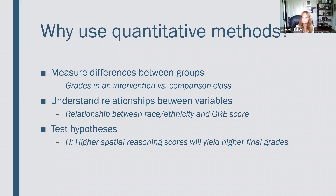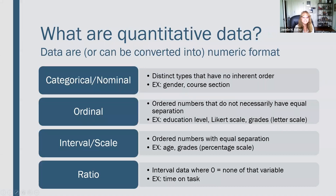So those are some of the reasons why you might use quantitative methods. But what do we really mean — what are quantitative data? Well, it's any data that either are or can be converted into a numeric format. There are four types of quantitative data. The first is known as categorical, or sometimes nominal.